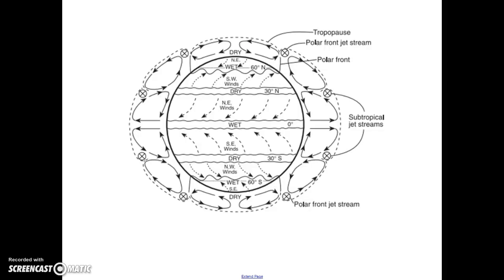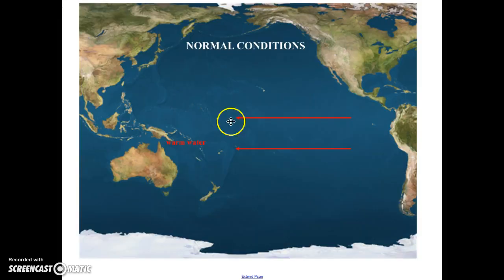If we look at the prevailing wind map in our reference table, we'll see that along the equator we're dealing with two prevailing winds. We have these northeasterly winds and the southeasterly winds, which are converging at the equator, and they push the water towards the west. If the wind's coming from the east, the water will get pushed to the west.